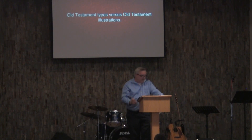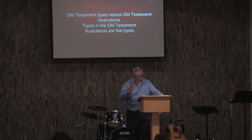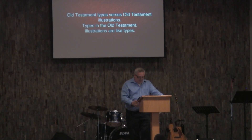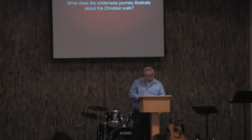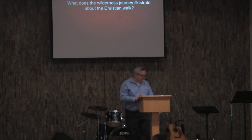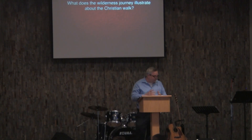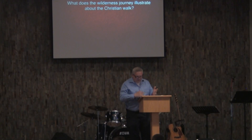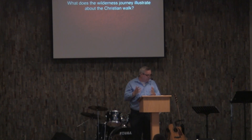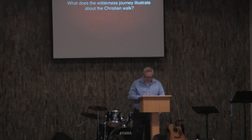Illustrations are like types in that you can see many similarities — just as with Joseph's life and what Christ went through. The wilderness journey as a whole is an illustration, not a type. However, parts of it are types. For instance, the snake in the wilderness is a type of Christ, as Christ declares in John 3:14. The rock is also a type of Christ, as stated in 1 Corinthians 10:4, which we just read.